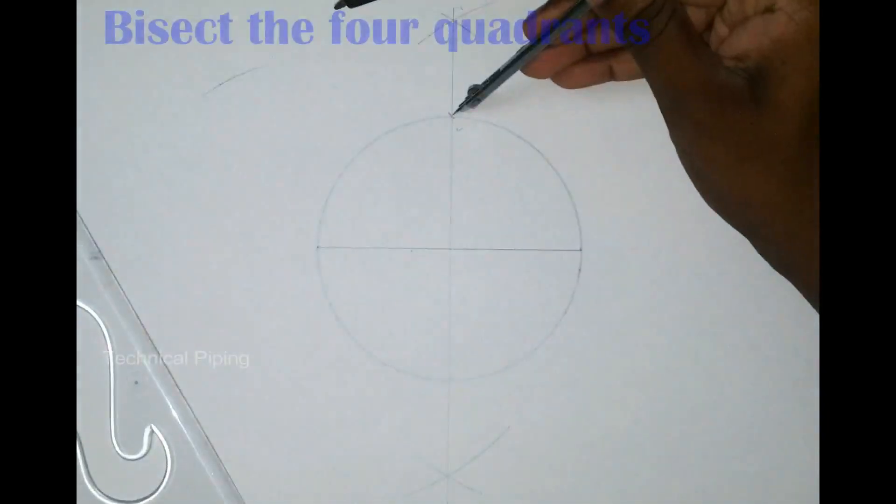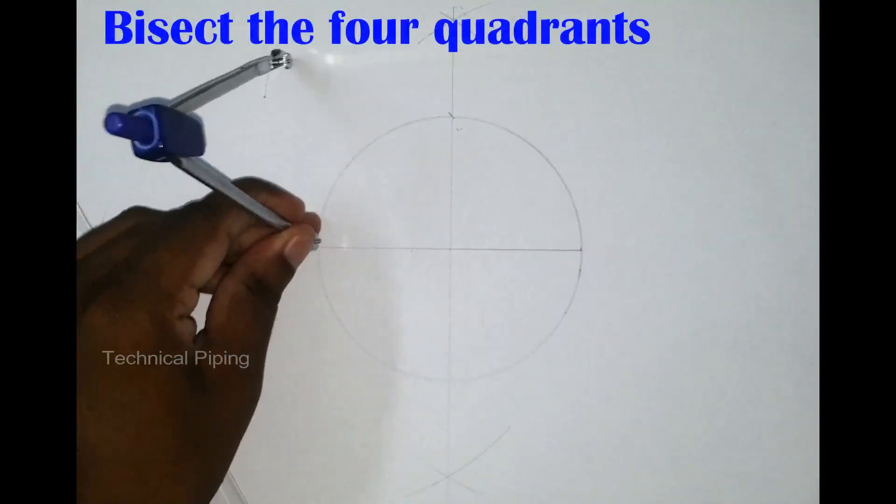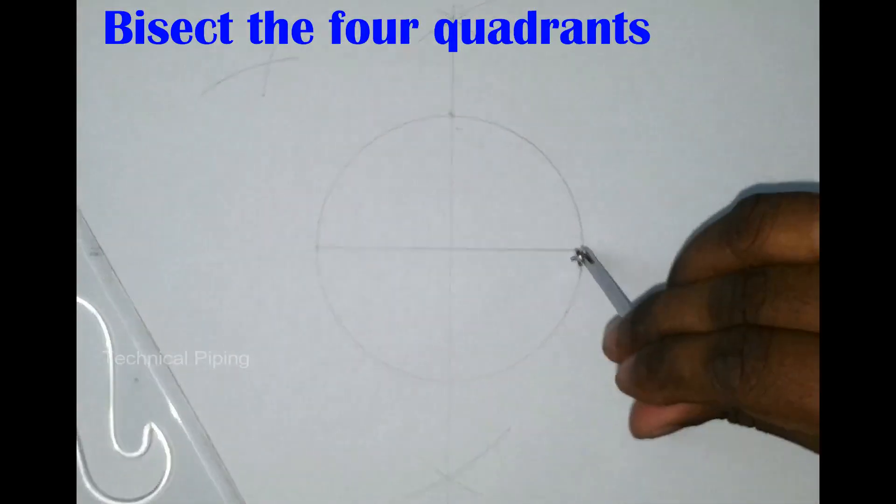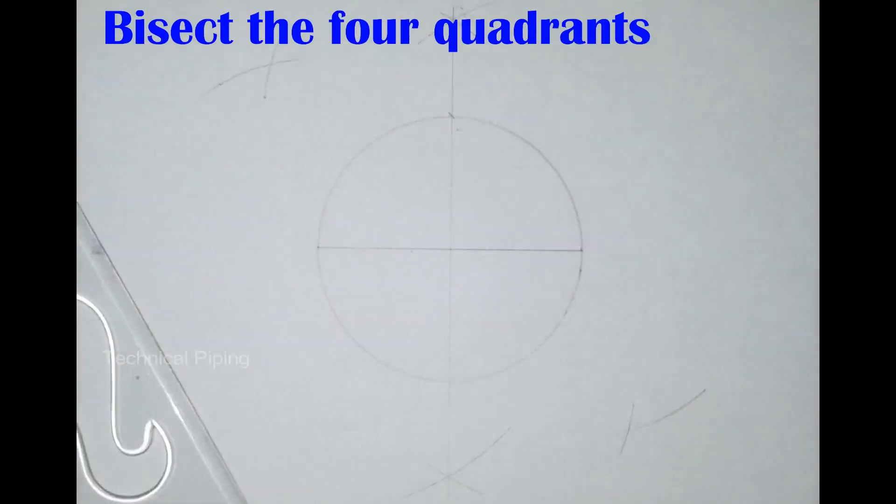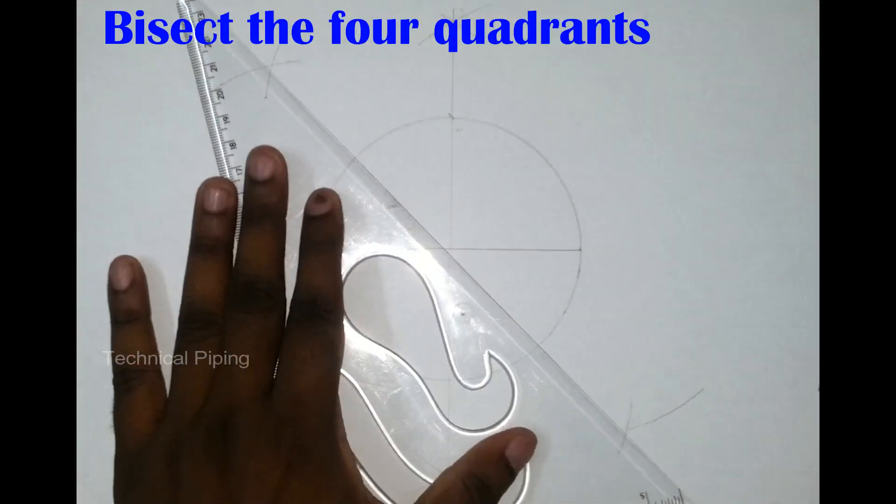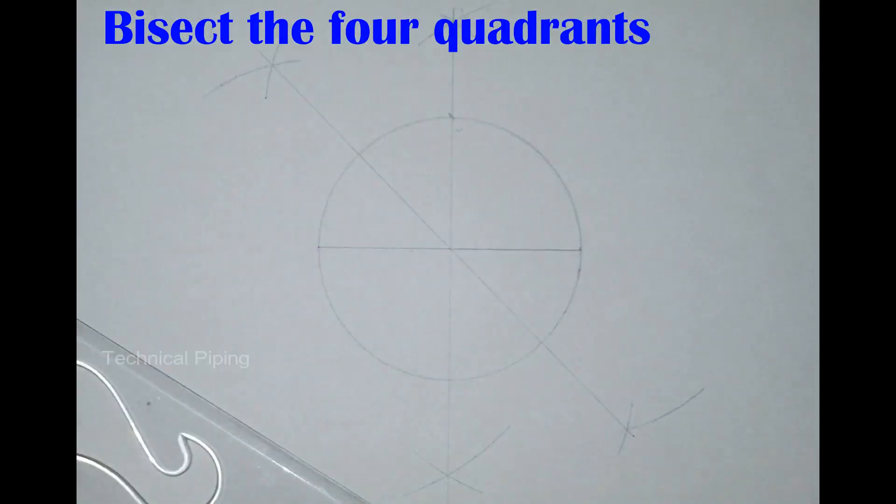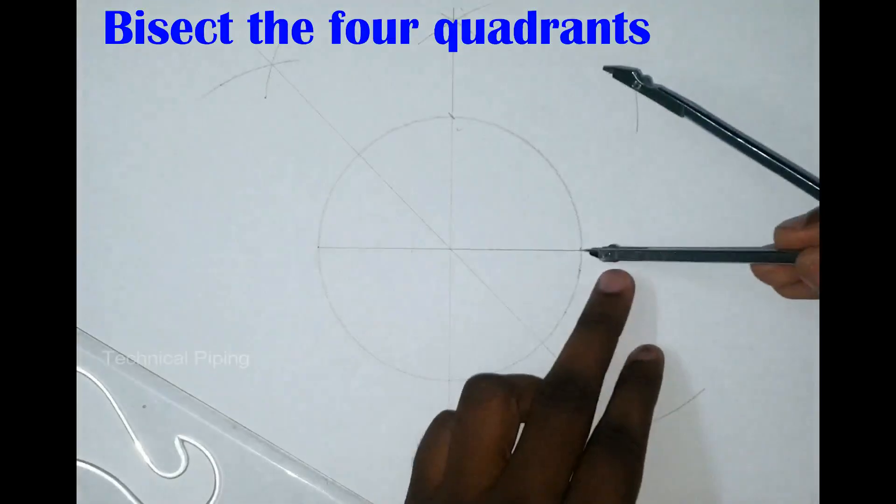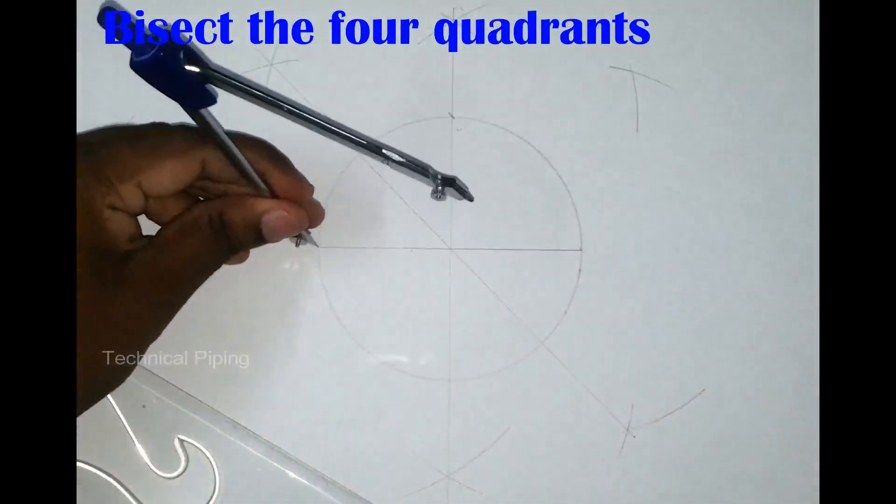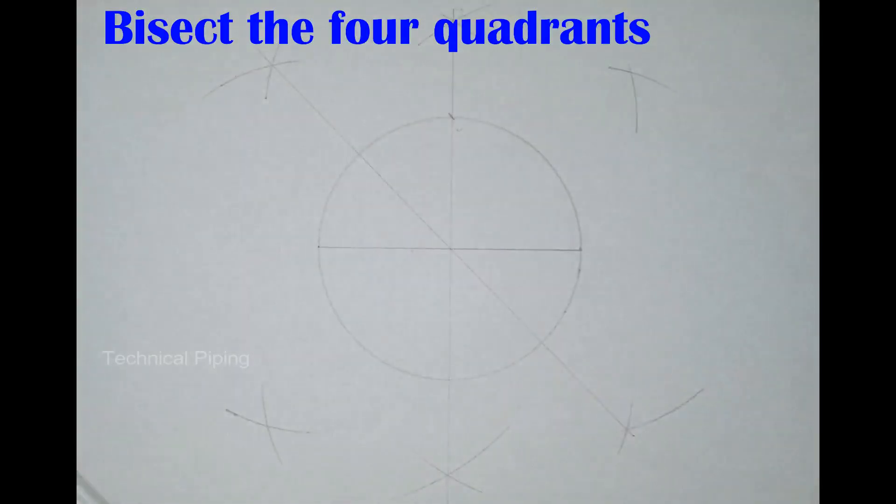We do the work to bisect the four quadrants.